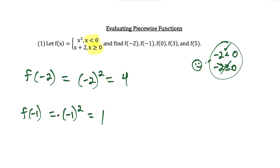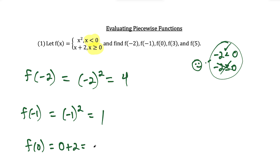Now we plug in zero. When we think about zero, we ask: is zero less than zero, or is zero greater than or equal to zero? Now x equals zero satisfies the second row, so this is the part of the function we plug into. We get zero plus two is equal to two, so f of zero is equal to two.